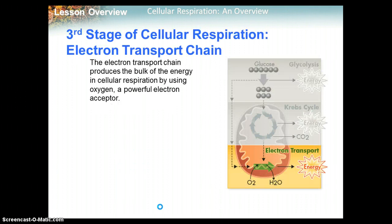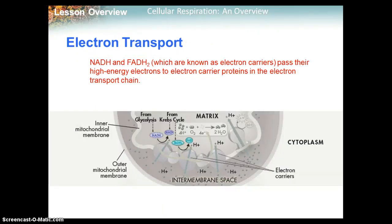The third stage is called the electron transport chain. The electron transport chain produces the bulk of the energy in cellular respiration by using oxygen, which is a powerful electron acceptor. NADH and FADH2, known as electron carriers, pass their high-energy electrons to electron carrier proteins in the electron transport chain.